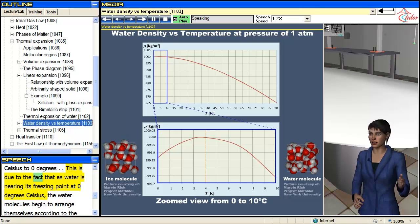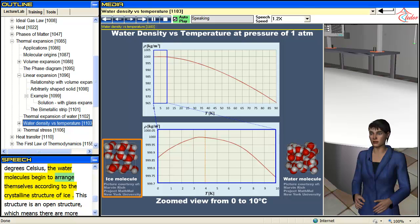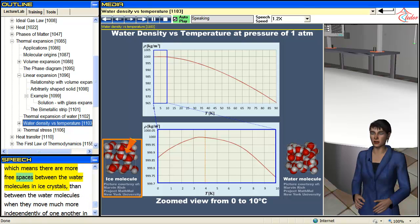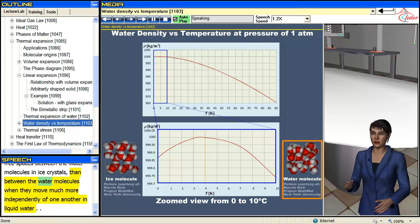This is due to the fact that as water is nearing its freezing point at 0 degrees Celsius, the water molecules begin to arrange themselves according to the crystalline structure of ice. This structure is an open structure, which means there are more free spaces between the water molecules in ice crystals than between the water molecules when they move much more independently of one another in liquid water.